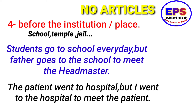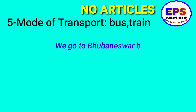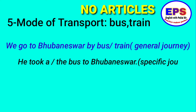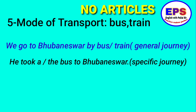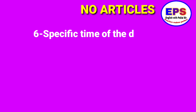Similarly: 'The patient went to hospital' — no article, general purpose. But 'I went to the hospital to meet the patient' — here 'the' is used because it is a visit, not for treatment. So when the purpose is to visit a specific place rather than its primary function, we use 'the.' For mode of transport: 'We go to Bhubaneswar by bus or by train' — no article in general journey.